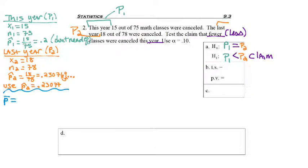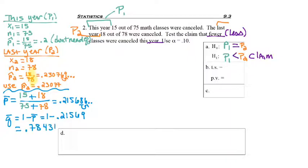Now I'm ready to find P-bar. If you remember, the first thing you can do is take that first fraction, 15 over 75, and stick it in the first parts of the P-bar formula. Take your next fraction of 18 over 78 and stick that into the right side of your P-bar formula, and you'll end up getting 0.215686, which again we'll be using 5 digits.